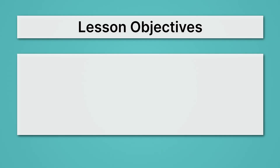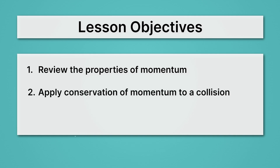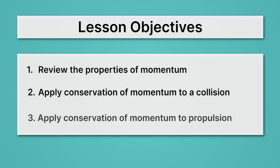Let's begin by looking at our lesson objectives. First, we'll review the properties of momentum. Most importantly, we'll review the conservation of momentum. Then we'll apply conservation of momentum to a collision — we'll see how this principle helps us understand collisions. Then we'll apply conservation of momentum to propulsion, which means getting something moving, and we'll see that conservation of momentum helps us understand this in many cases as well.